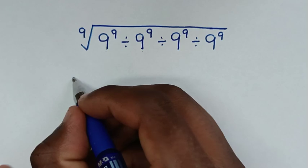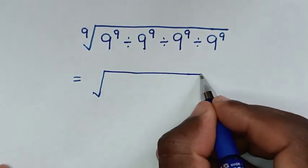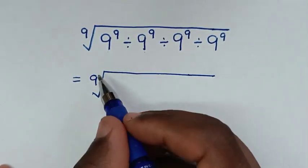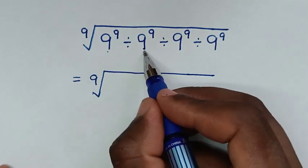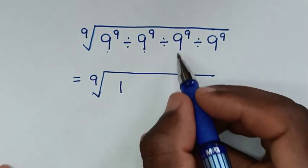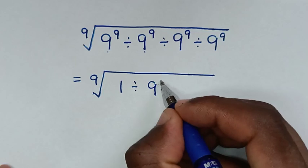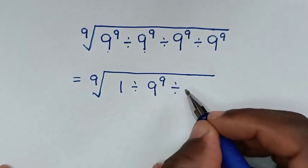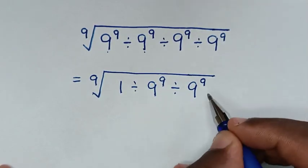So it will be equal to the 9th root. By dealing with this 9 power of 9 divided by 9 power of 9, it is 1. Then divide by 9 power of 9, then divide by this 9 power of 9.